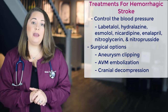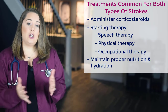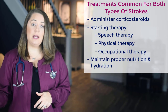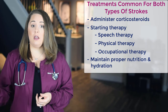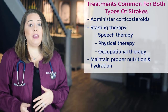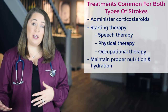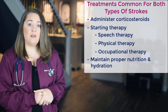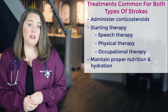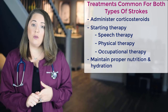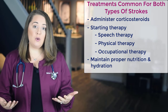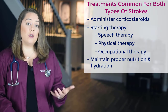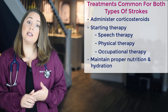Treatments common to both types of strokes include administering corticosteroids such as dexamethasone or Decadron to decrease brain swelling. Start therapy as soon as the patient is medically stable, including speech therapy for speech and swallowing, physical therapy to maintain muscle tone and rebuild strength, and occupational therapy to help regain function with activities of daily living. Maintain proper nutrition and hydration — these patients may need pureed foods and thickened liquids, or TPN therapy and IV fluids if they are too high risk for aspiration and choking.